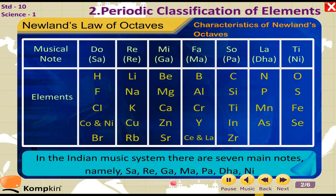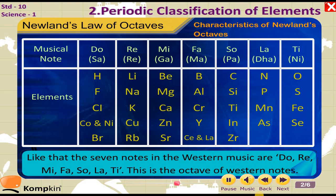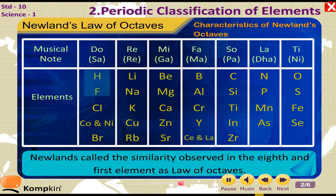Newlands compared this similarity with the octaves in music. In the Indian music system, there are 7 main notes, namely Sa, Re, Ga, Ma, Pa, Dha, Ni, and their collection is called Saptak. Similarly, the 7 notes in western music are Do, Re, Mi, Pa, So, La, Ti — this is the octave of western notes. Newlands called the similarity observed in the 8th and 1st element the Law of Octaves.